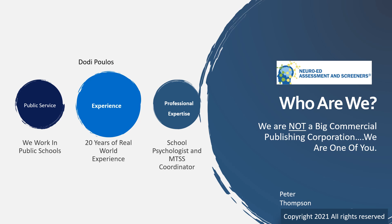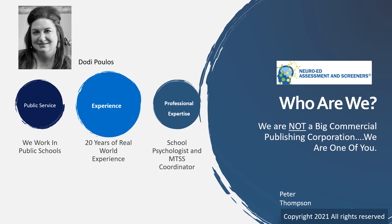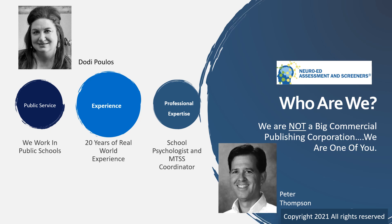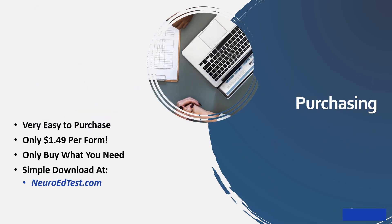Critical to our mission in service to others: the creators of the NeuroEd family of products are not some big impersonal business or testing company — we are one of you, practitioners working in a public school or private practice. We know what teachers and staff want because we are one of you. To purchase any NeuroEd product, simply go to our website at neuroedtest.com, noted in blue at the lower left-hand side of this slide, where you can view more information about each rating scale and download the products you want. You only purchase what you need.